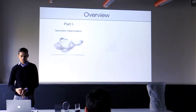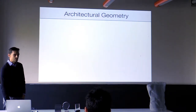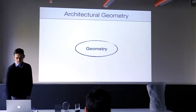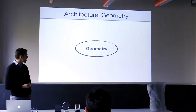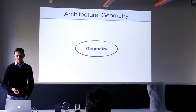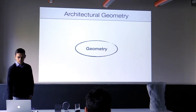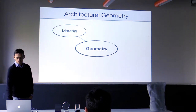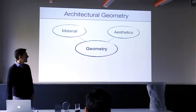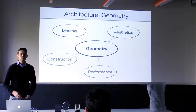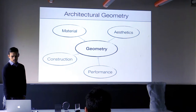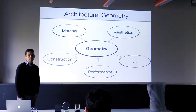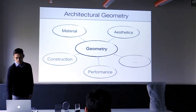Let me get started on geometry optimization. Geometry is something you're all working with every day — it's central to design. For me, geometry is a medium to express different things. In architecture, the geometry we're designing is informed by many factors: the material we're using, the specific aesthetics, a construction process, the performance of the design. Geometry is a representation, but it has to account for many factors that determine its shape.